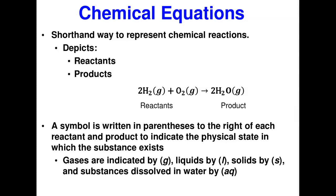These are the things you are expected to answer by the time you finish listening to this class. Chemical equations: my best definition is that a chemical equation is a shorthand way to represent a chemical reaction. A chemical reaction is a chemical change, and we can represent that on paper in a short way as a chemical equation, dividing it into two parts: the reactants and the products.